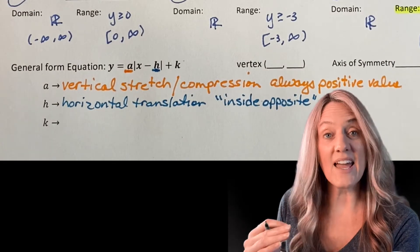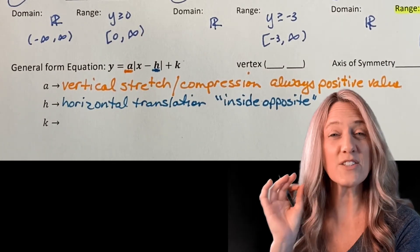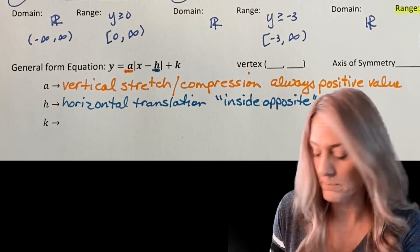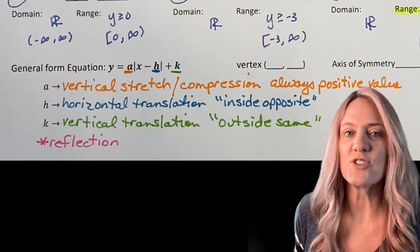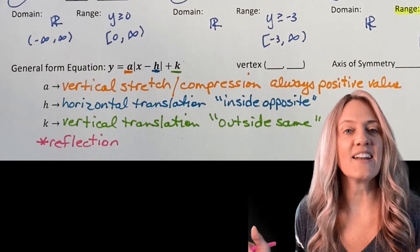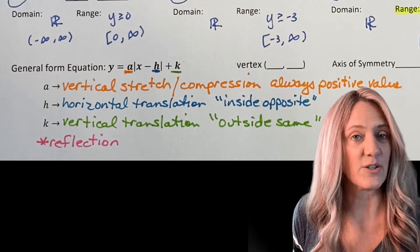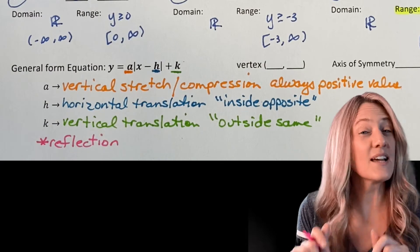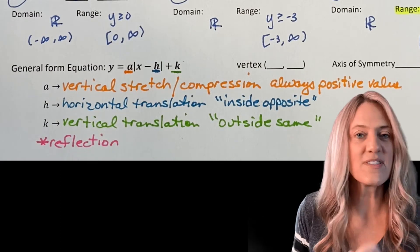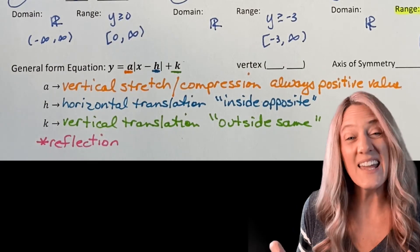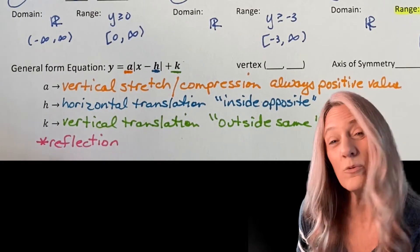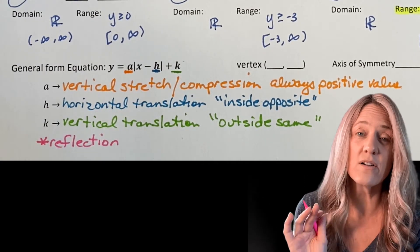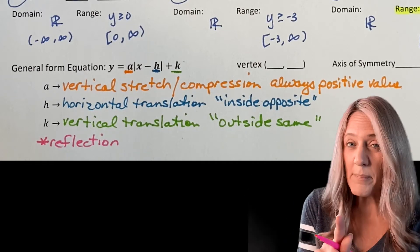And last, k — we've seen that k moves it up and down, so that's our vertical translation. Remember: outside, same. I said a is your vertical stretch or compression and it's a factor, and we always have it positive. But if it happens to be negative, that negative means something else — it actually means we have a reflection. So that's where we get our reflection across the horizontal or vertical axis.